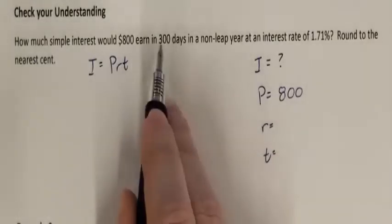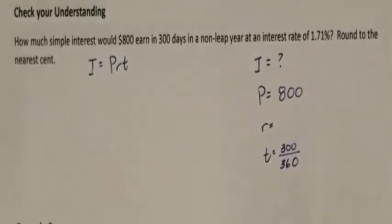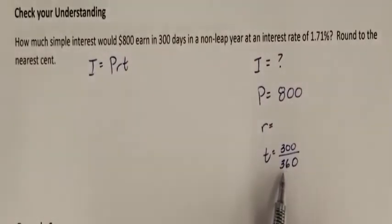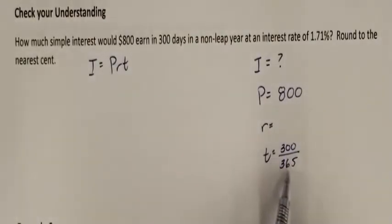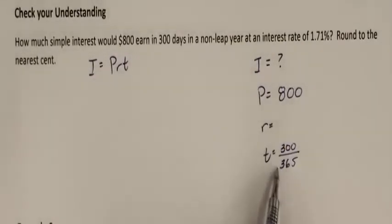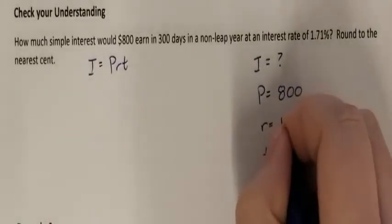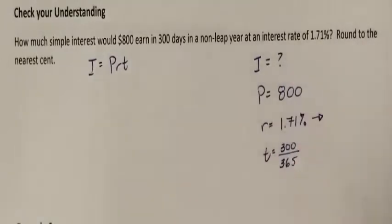Time needs to be in years. So 300 days would be 300 out of 365 days available in a year, because it's a non-leap year. Non-leap years have 365 days — leap year adds an extra day, but since it's a non-leap year, it's 365. So you can only use 300 out of 365 days.